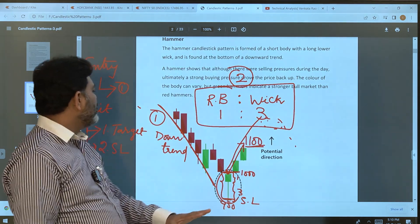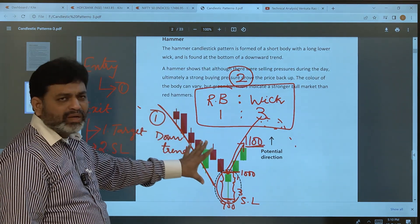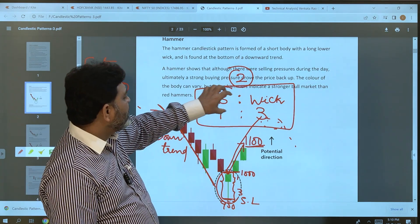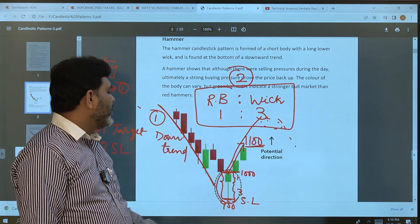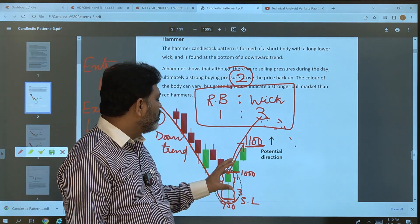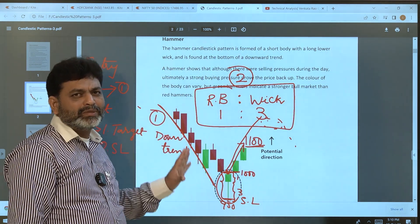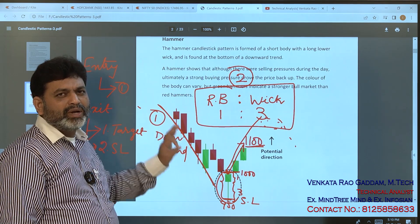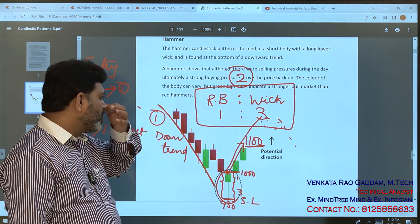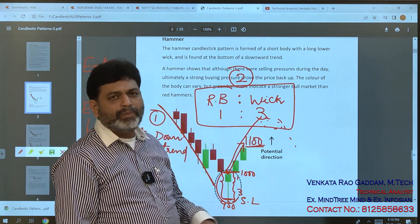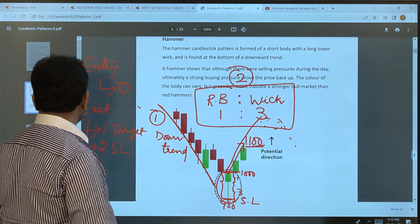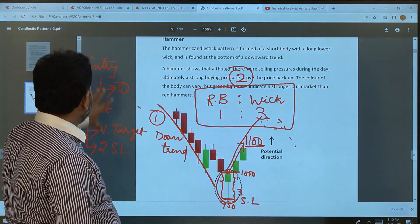The first requirement is trend should be down. Second requirement is the real characteristic of the candle or hammer - one is to three times minimum. One time body and three times lower wick should be present. Now let's see real-time examples and entry and exit scenarios. Let's look at entry, target, and stop loss.